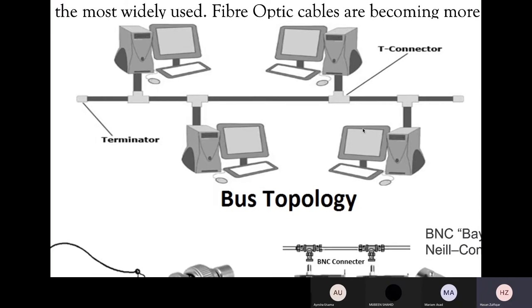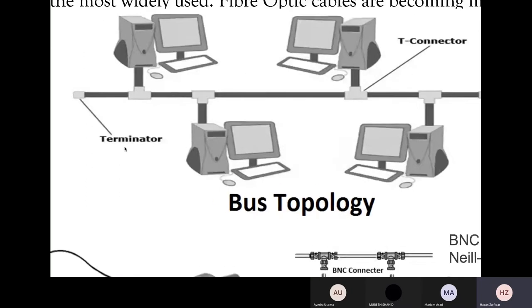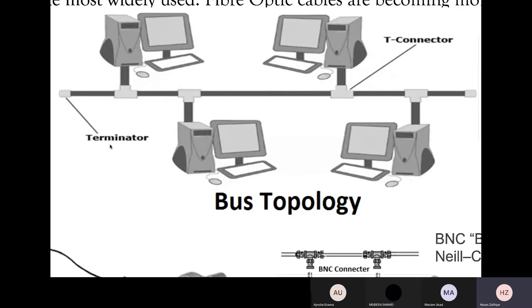At the ends of this bus cable, we have what is known as a terminator. What a terminator does, as the name suggests, is it basically terminates something — and what it's terminating is a data transfer.